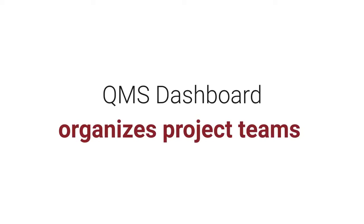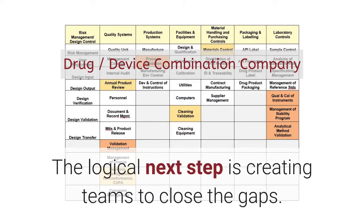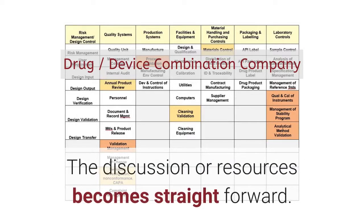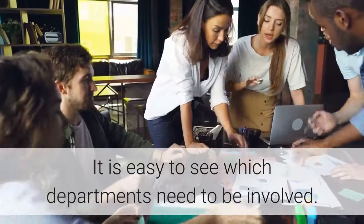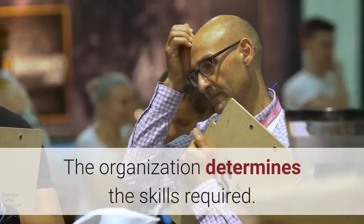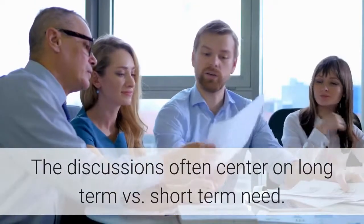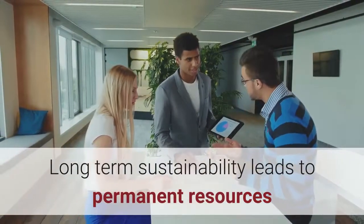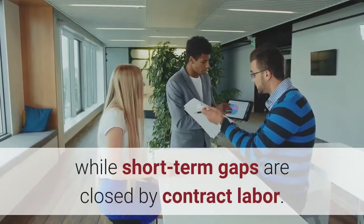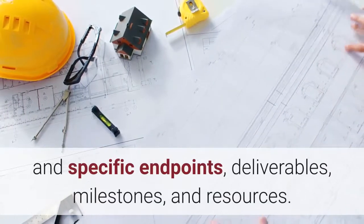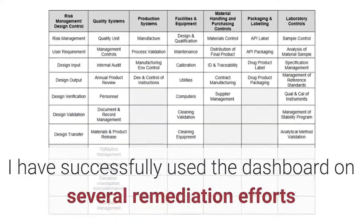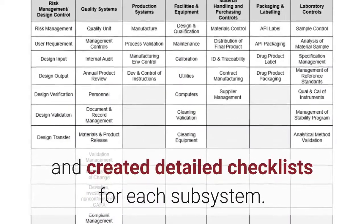The QMS dashboard organizes project teams. The logical next step is creating teams to close the gaps. The discussion of resources becomes straightforward — it is easy to see which departments need to be involved. The organization determines the skills required. Discussions often center on long-term versus short-term need. Long-term sustainability leads to permanent resources, while short-term gaps are closed by contract labor. Project charters are easy to write with detailed and specific endpoints, deliverables, milestones, and resources.